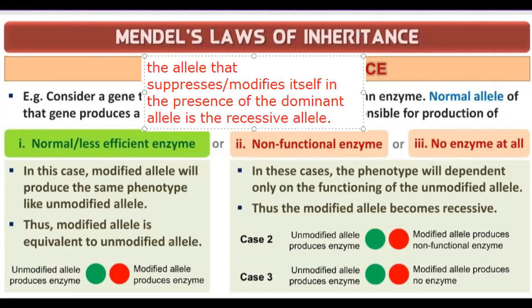So that was all about the first part of the principles of inheritance. We studied about genetics, many important terms, why Mendel is known as the father of genetics, the important laws of inheritance, and the monohybrid and dihybrid processes. We studied about the conclusions, modifications, and results. That was all about this first part of principles of inheritance. Next time we are going to start the second part. Thank you and have a nice day.